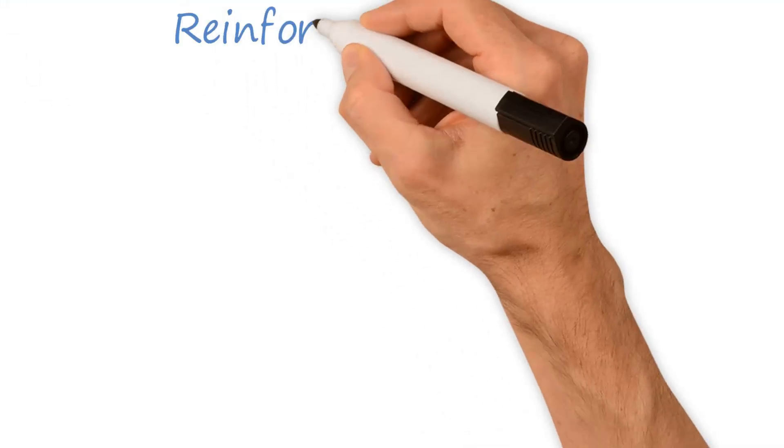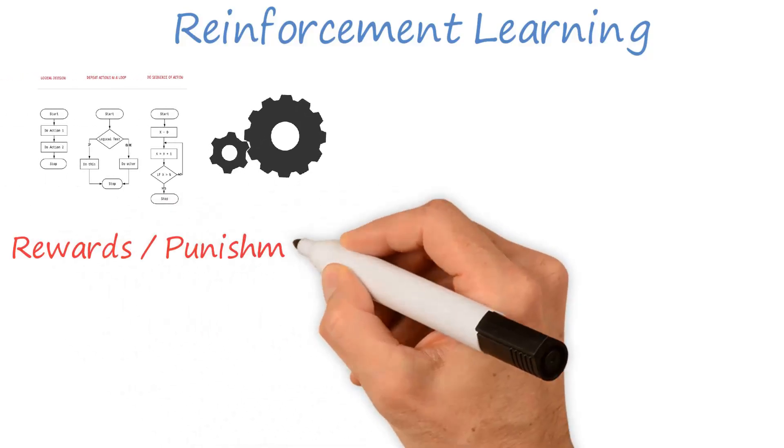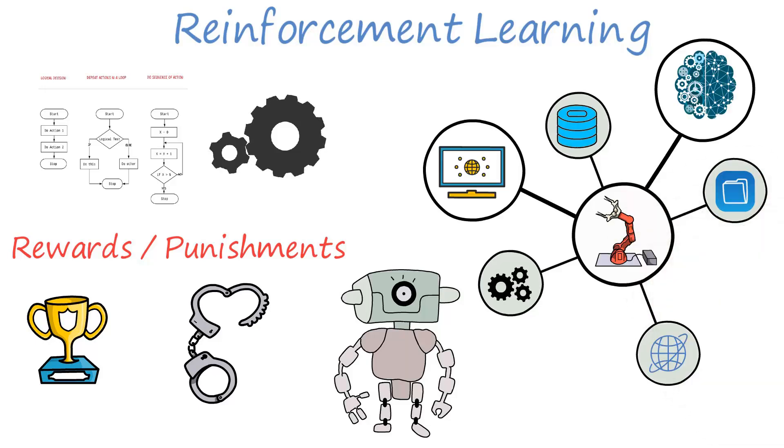Another area of active research in machine learning is reinforcement learning, which involves training machine learning algorithms to make decisions based on rewards or punishments. This type of learning has been used to develop advanced robotics and autonomous systems and has the potential to transform many other industries as well.